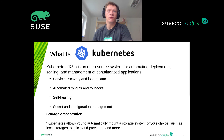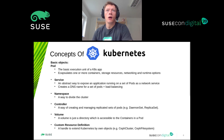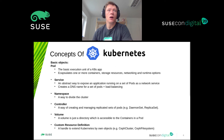Kubernetes does not do storage integration natively — it needs some integration. A pod is the basic execution unit of a Kubernetes application. A pod encapsulates one or more containers, the storage resources, networking options, and runtime options. A service is an abstract way to expose an application running on a set of pods as a network service to your Kubernetes cluster, and Kubernetes automatically creates a DNS name for this set of pods with automated load balancing.